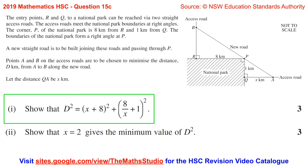A new straight road is to be built joining these roads and passing through P. Points A and B on the access roads are to be chosen to minimise the distance d kilometres from A to B along the new road. Let the distance QA be x kilometres.